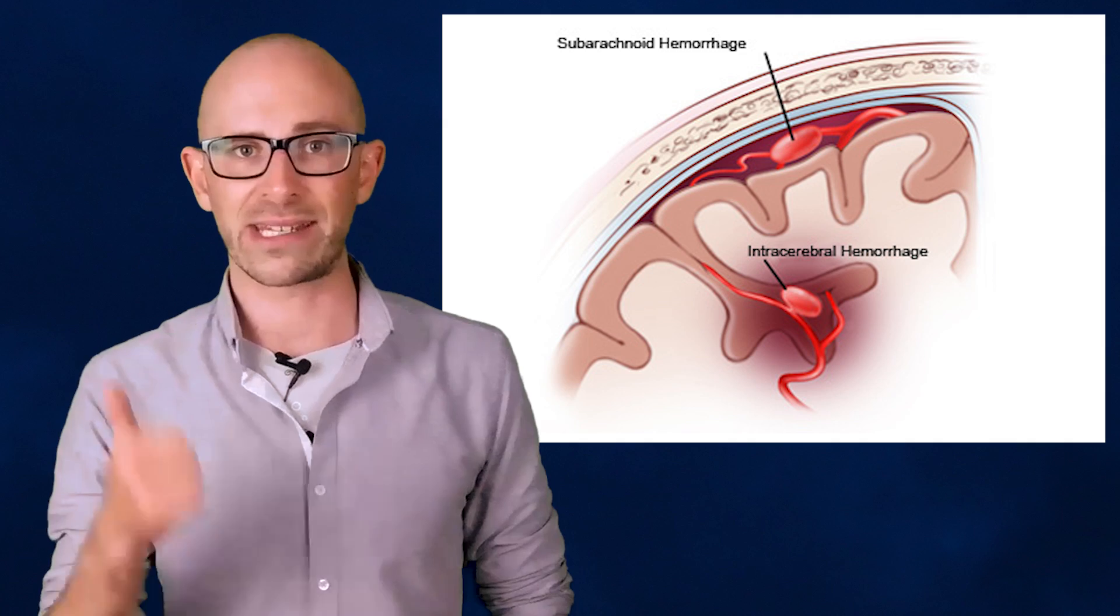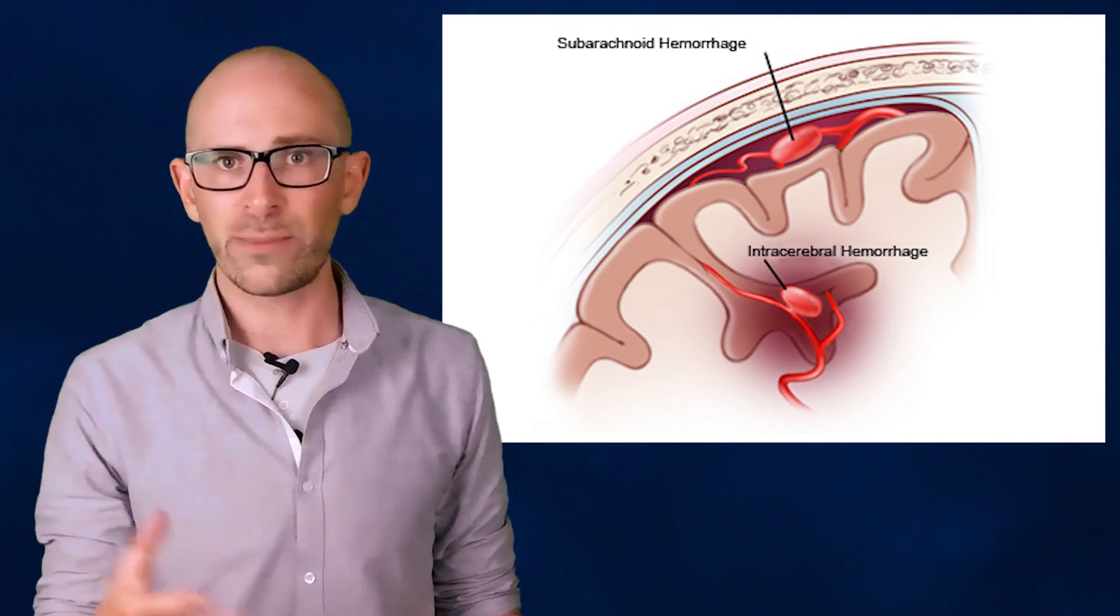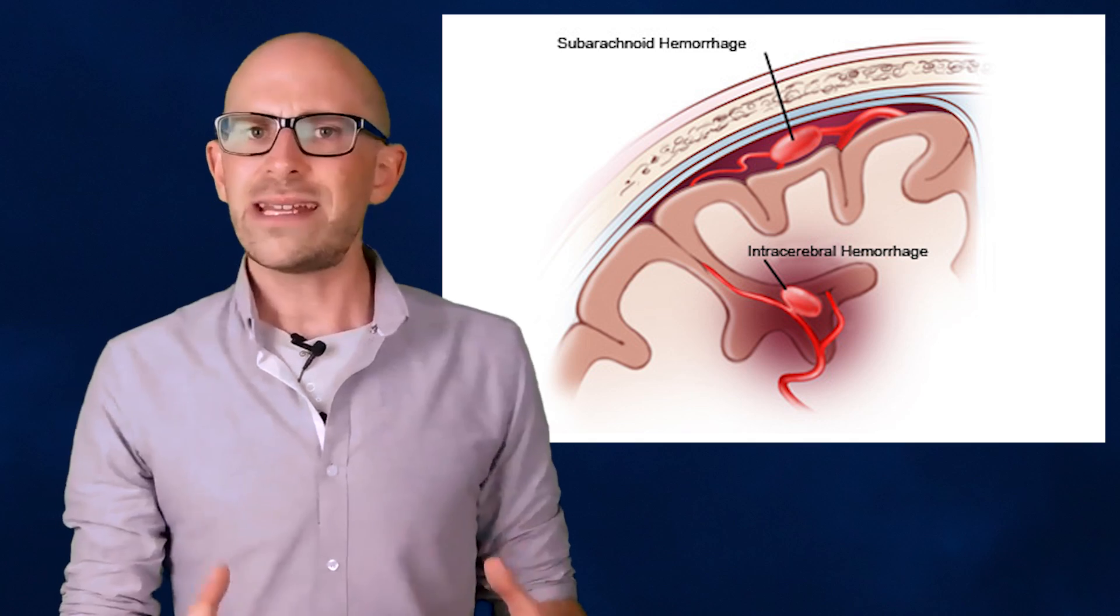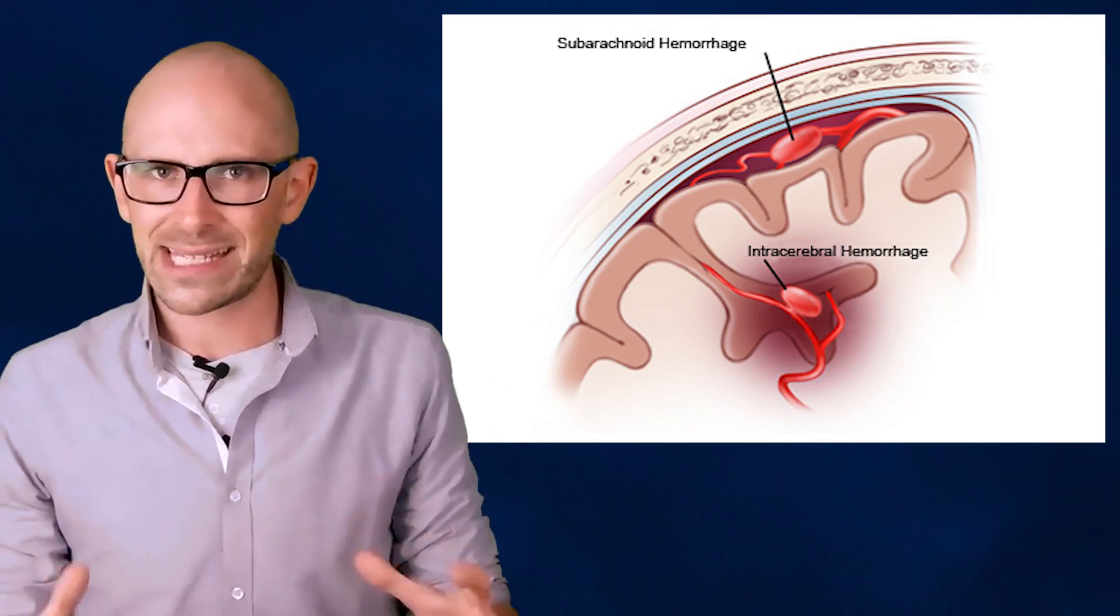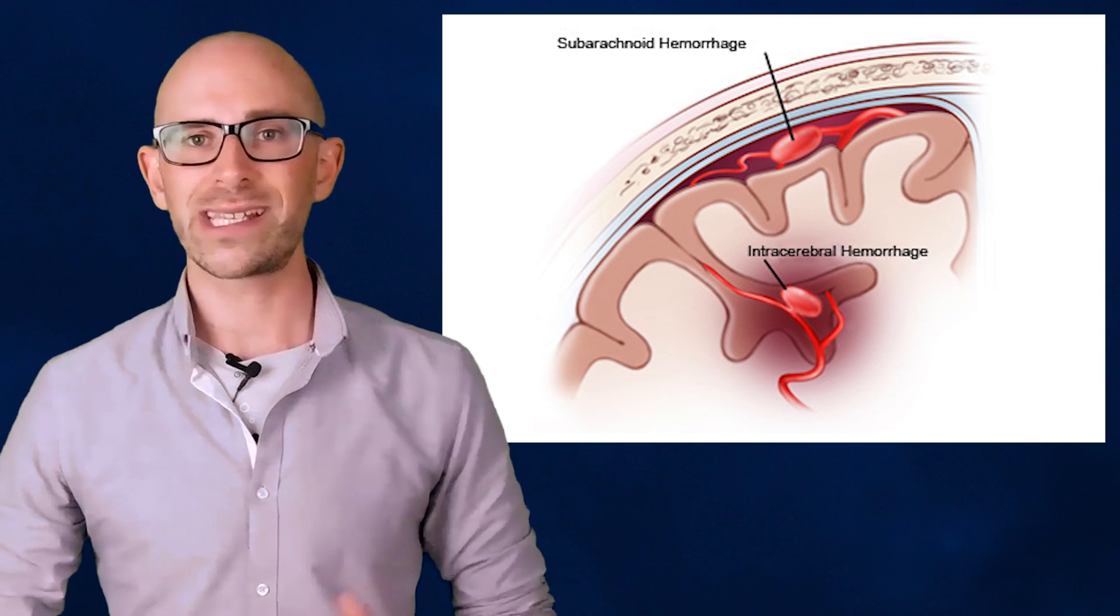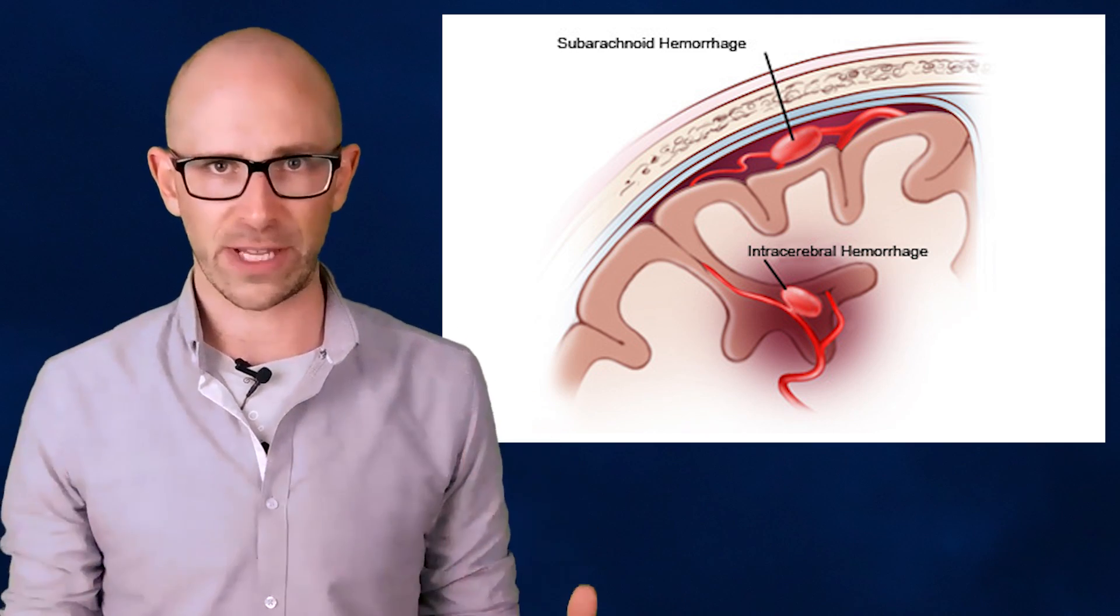Hemorrhagic strokes come in two varieties: intracerebral and subarachnoid. Intracerebral simply means that an artery within the brain itself ruptures. Not only do the cells downstream of the break begin to die, but blood gets introduced into the brain and causes the area around the bleed to compress the brain tissue, resulting in further damage.